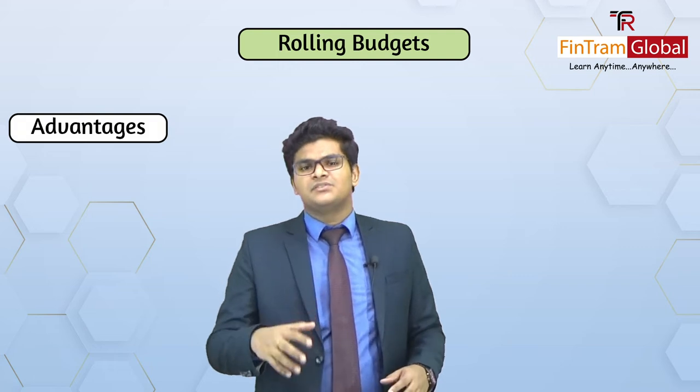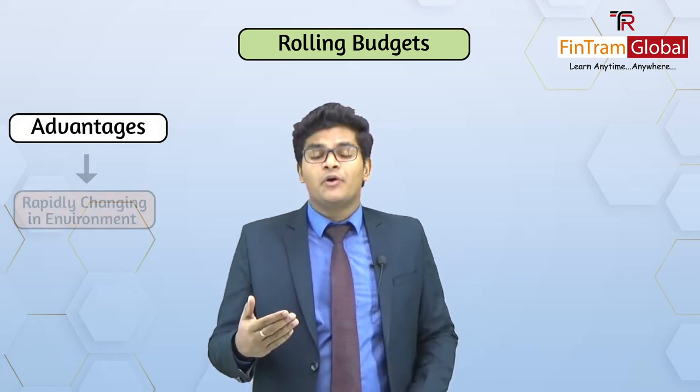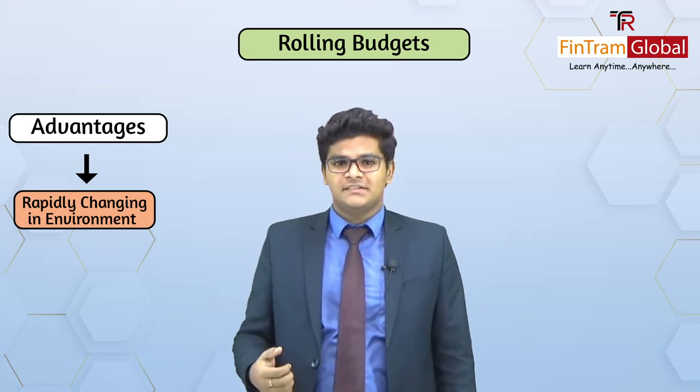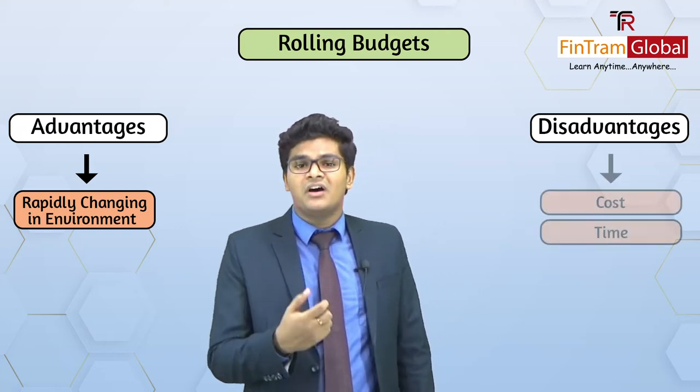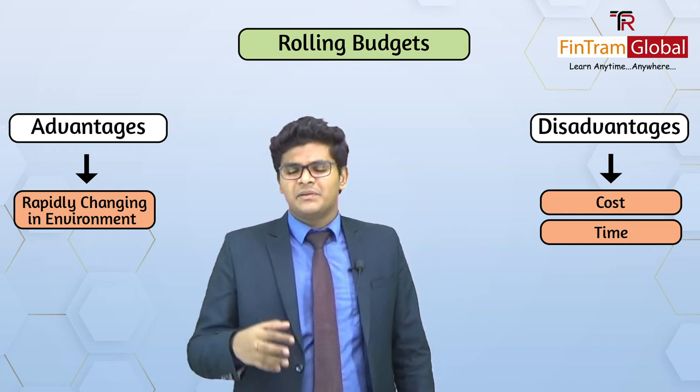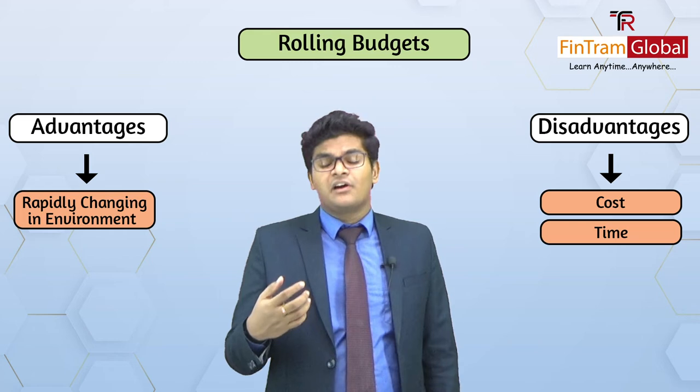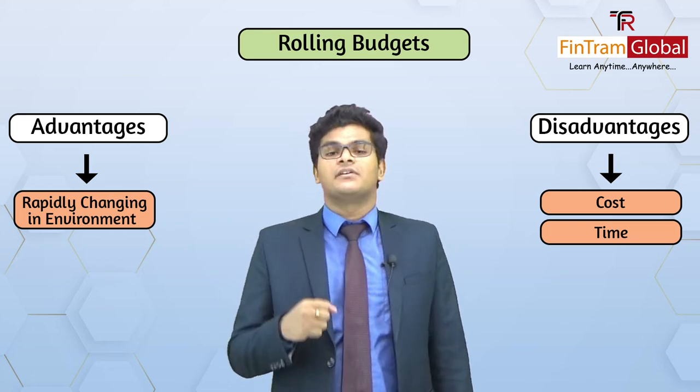Moving on to the next method — rolling budgets, also called continuously updated budgets. After each month or quarter, we take the actual results and revise the next quarter's budget based on those recently ended actual results. This is commonly suitable for organizations operating in a rapidly changing environment, such as the technology or fashion industry. The disadvantage is that there is a great deal of cost and time involved in continuously updating these budgets, and some may find it demotivating or feel the cost does not justify the benefit.